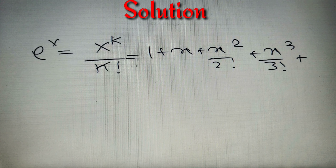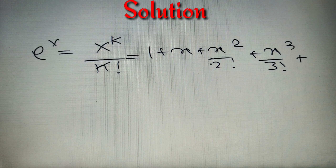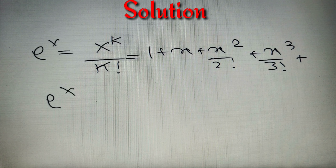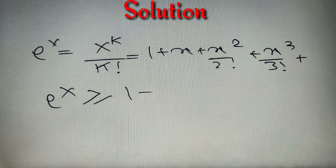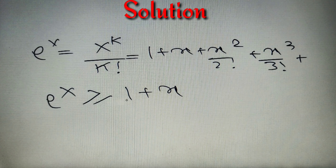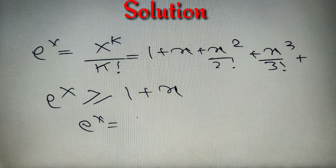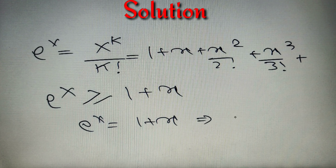Since the series for e^x is equal to 1 + x + x²/2! + x³/3! and so on, I can firmly say that e^x is at least greater than 1 + x. So, e^x is greater than or equal to 1 + x, and it equals 1 + x when x is equal to 0.